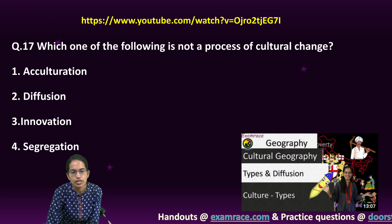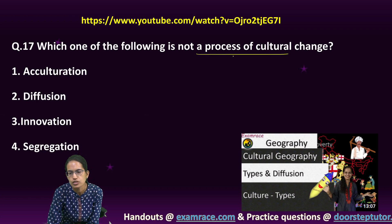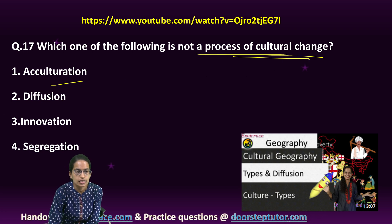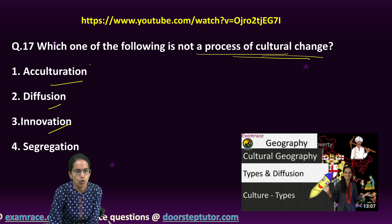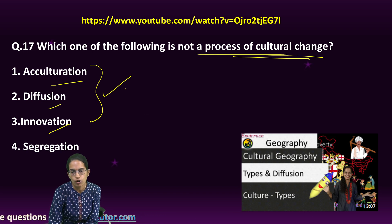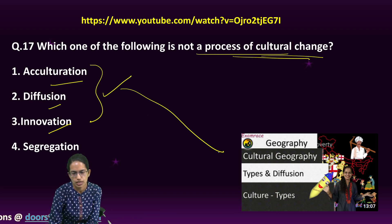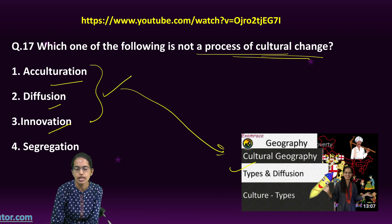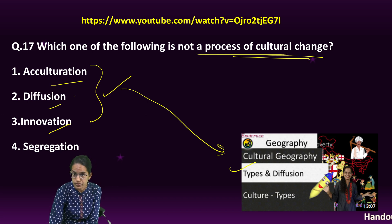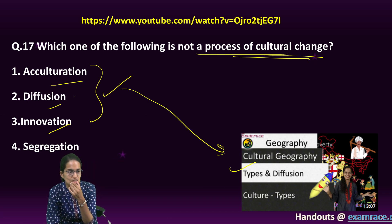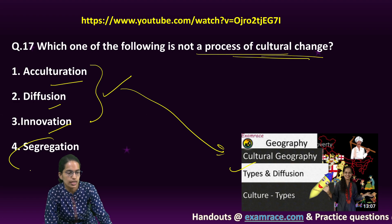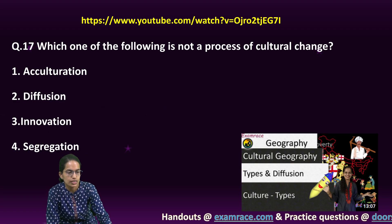Which of the following is not a process of cultural change? Acculturation, diffusion, and innovation are all types of cultural change. The types of diffusion and cultural change have been covered extensively in our classes on cultural geography, so refer to those for more detail. Here, the answer would be segregation.